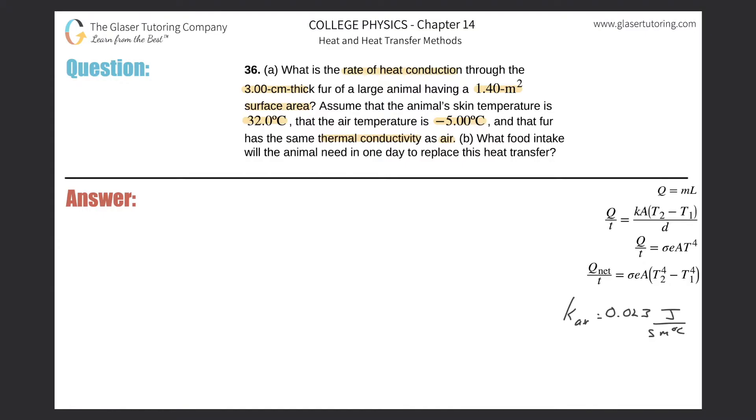Alright, so we've seen a bunch of problems like this. Anytime you see the rate of heat conduction, this is your formula. Q over T. Remember that Q over T is simply equal to power. Q is energy, T is time, so joules per second, that's a watt. So Q over T is power.